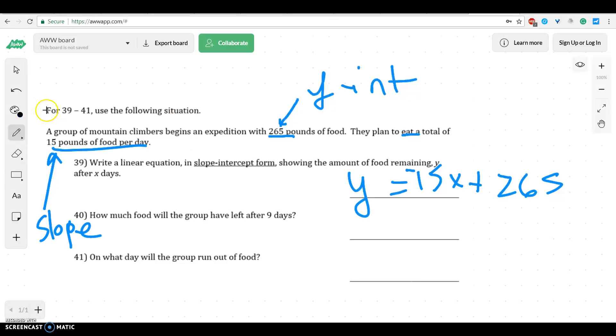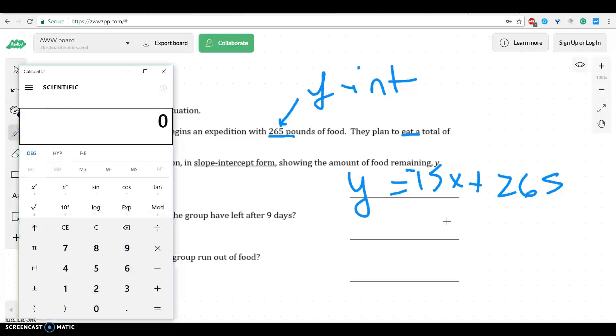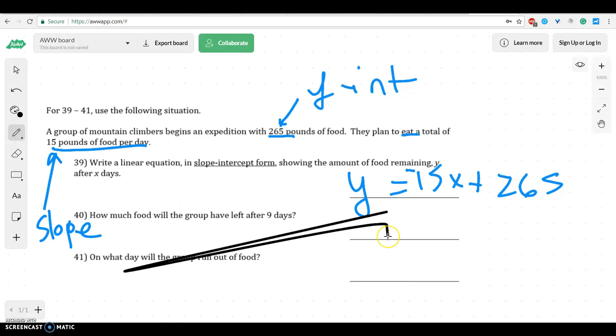Well, now what we would do is they say, how much food will the group have left after 9 days? Well, x is the amount of days. So we'd have to do 15 times 9 and make that negative plus 265 because that's how much we started with. And we'd have 130.